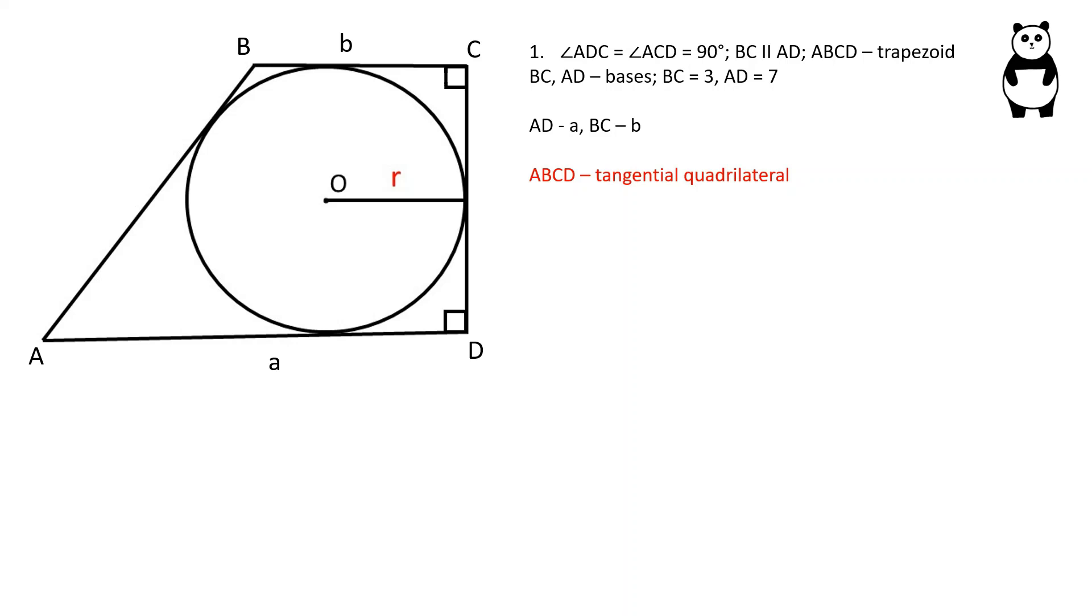ABCD is a tangential quadrilateral, a quadrilateral whose four sides are all tangent to a circle inscribed within it. In such a quadrilateral, the sums of lengths of its two opposite sides are equal. AB plus CD is equal to AD plus BC, therefore AB plus CD is equal to A plus B, and AB is equal to A plus B minus CD.